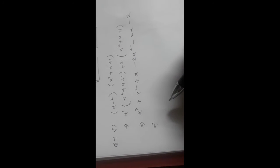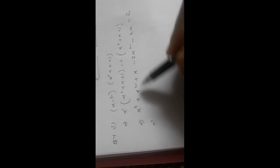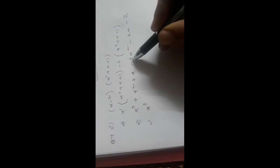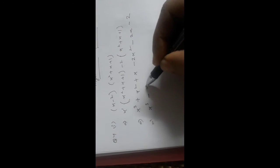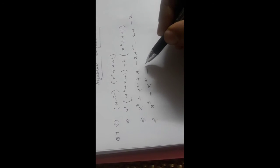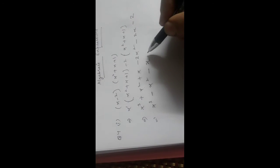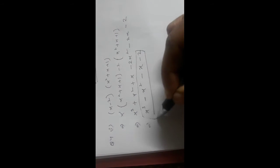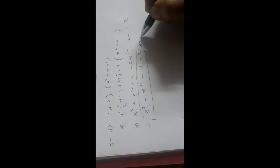Now we search for like terms. x³ is single in the whole expression, so it comes as is. Minus 2x² and x² — the sign is negative — gives minus x². Then minus 2x and positive x gives minus x. And minus 2 remains. So the answer is x³ - x² - x - 2. If there is any doubt you can ask in the comment box. This is the solution of Part 1 of Question 4.